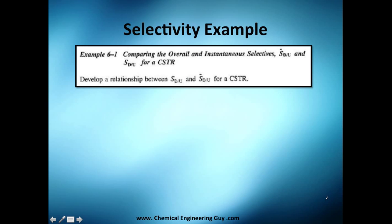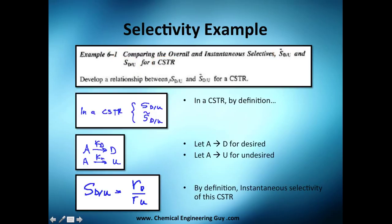I have an example here, actually pretty easy. This is example one from chapter 6 from Scotty Fogler's book, comparing the overall and instantaneous selectivities in a continuous stirred tank reactor, so they asked us to do a relationship. In a CSTR by definition, you have these two. This is an example using A turns into D and A turns into U.